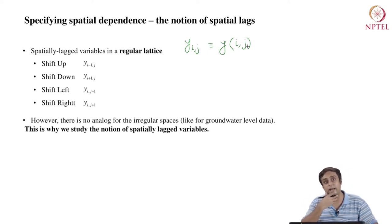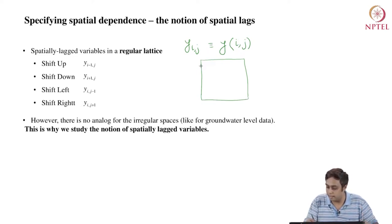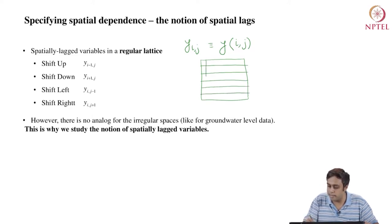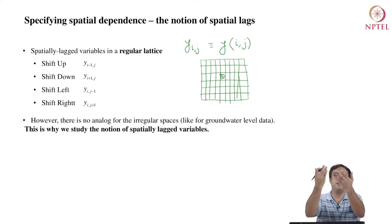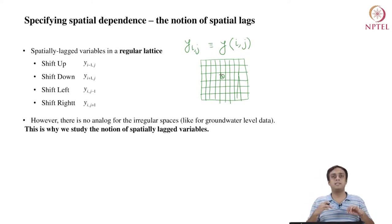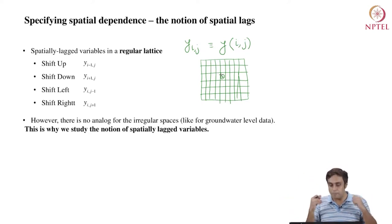If you have a regular lattice — a lattice with equi-sized cells constructed by n rows and m columns — then for any given cell, you can find its neighbor to the north one step up, equal-size cell. If you take a step down, that is southward, you find another neighbor. Similarly, a neighbor on the east and a neighbor on the west. Shifting up would mean y_{i-1,j}; shifting down is y_{i+1,j}. So i represents the vertical direction — downward south is conventionally taken as positive. Shifting left gives y_{i,j-1} and shifting right gives y_{i,j+1}.